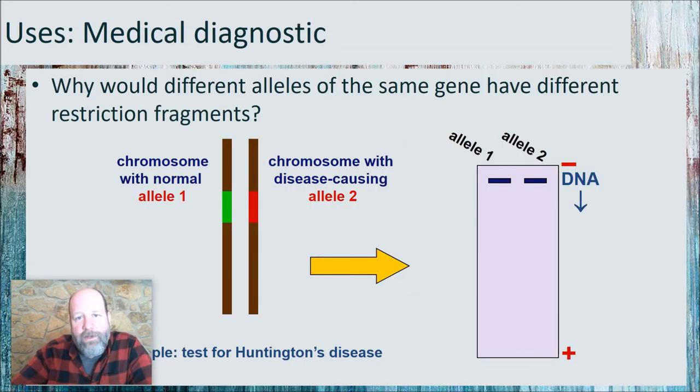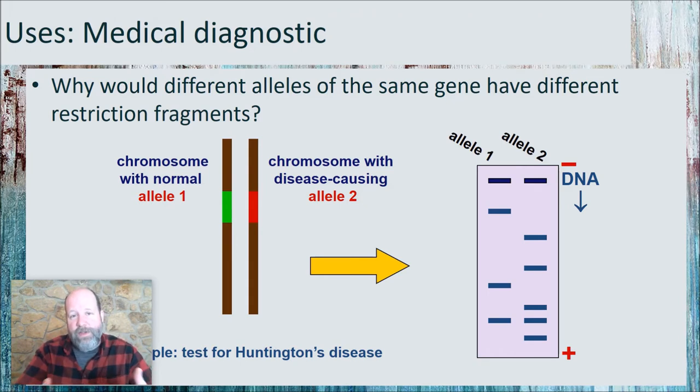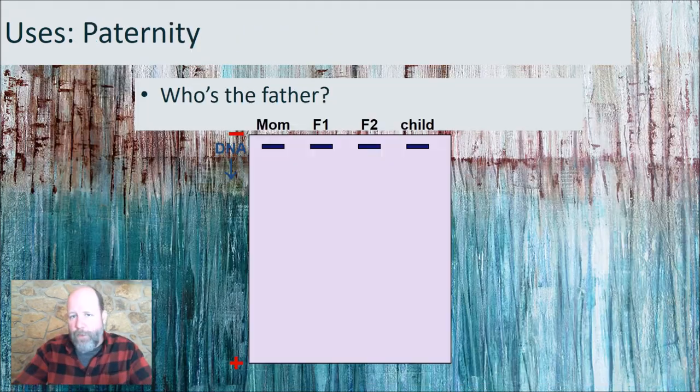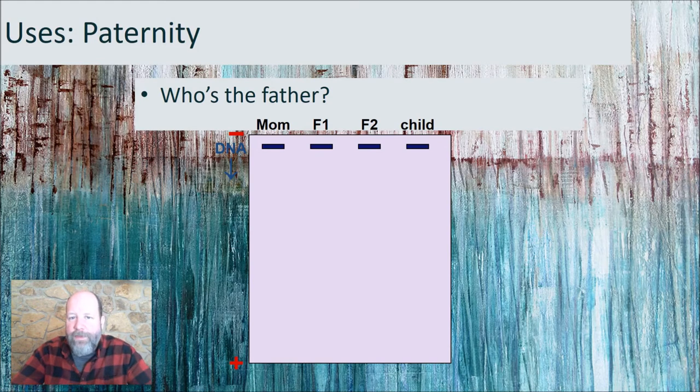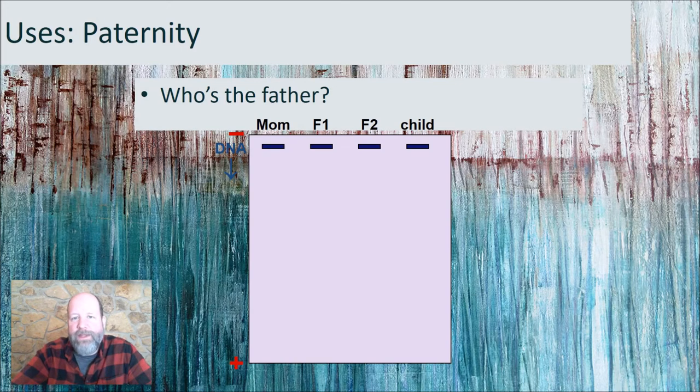We can also use this for diagnosing genetic conditions. But for that to work, the two different versions of the gene have to generate different size restriction fragments, meaning they have different restriction sites in them or some insertion or deletion that makes the pieces different sizes. But we can often find a mutation that shows up in electrophoresis. So when we do electrophoresis of just that piece of DNA, we can see that it has different versions. Of course, this is also used for paternity.